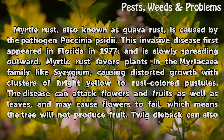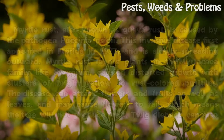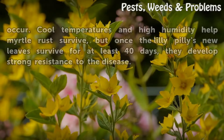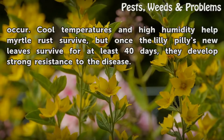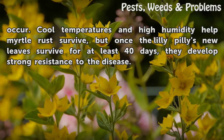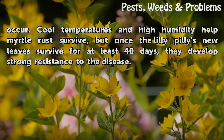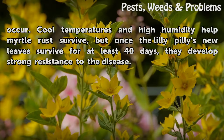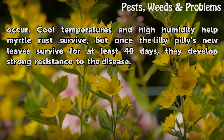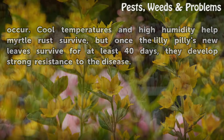Myrtle rust may cause flowers to fail, which means the tree will not produce fruit. Twig dieback can also occur. Cool temperatures and high humidity help myrtle rust survive, but once the Lillipilly's new leaves survive for at least 40 days, they develop strong resistance to the disease.